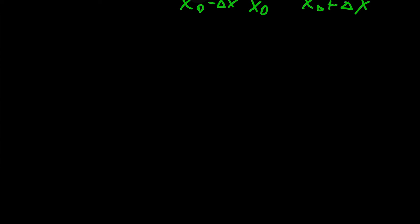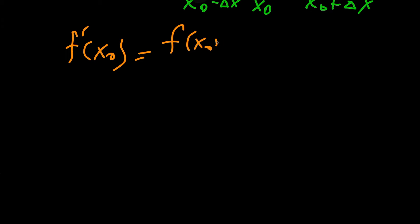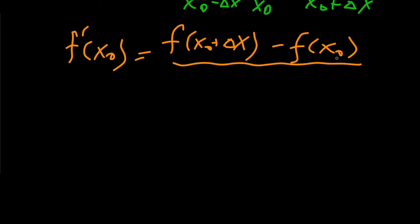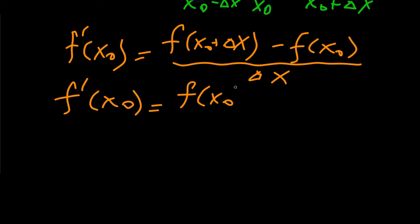Let's write equations for these secant lines and use them as a derivative approximation. The first one: f prime at x0 equals f at x0 plus delta x minus f at x0, divided by delta x. We already know this equation. The second one: f prime at x0 equals f at x0 minus f at x0 minus delta x, divided by delta x.